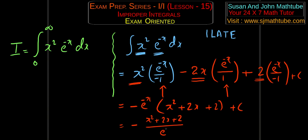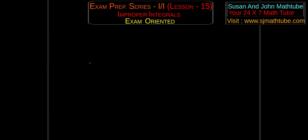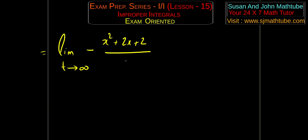Now we change the Type 1 improper problem into a limiting problem. So: limit as t tends to infinity of −(x² + 2x + 2)/e^x evaluated from 0 to t. Keeping the negative outside: minus limit as t tends to infinity of (t² + 2t + 2)/e^t, minus (0 + 0 + 2)/e^0, which gives minus 2.